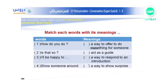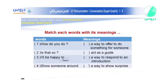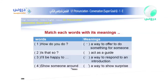Excellent — yes, 'I'll be happy to' is a way to offer to do something for someone. For example: 'I'll be happy to help you,' 'I'll be happy to read it for you.' Number four: 'Show someone around' — which meaning? Yes, excellent — it means to act as a guide. This is number four.